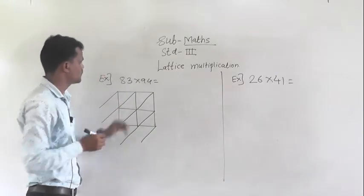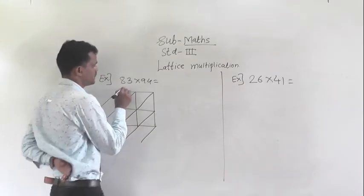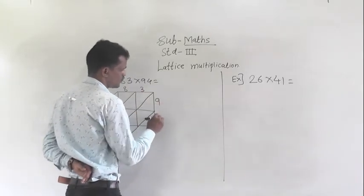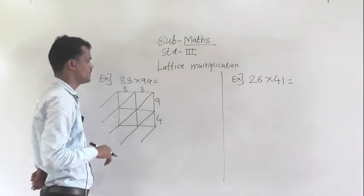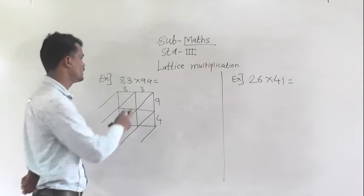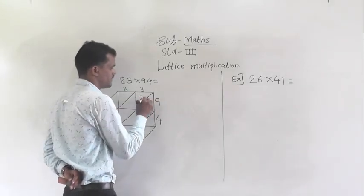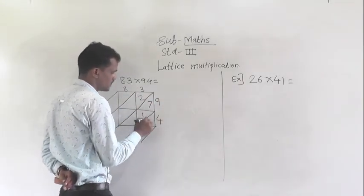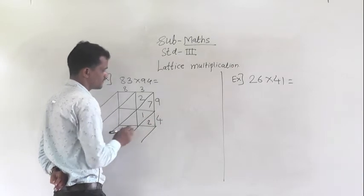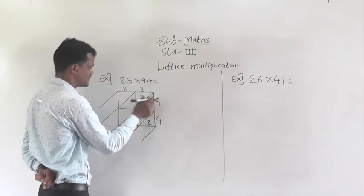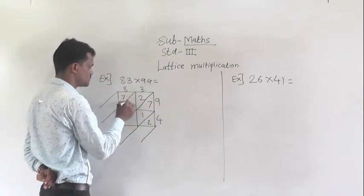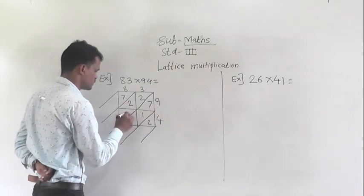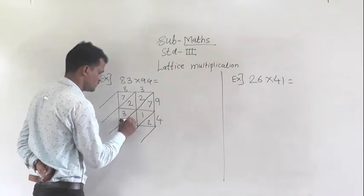Write 83 and 94 here and multiply: 3 nines are 27, 3 fours are 12. Next, 8 nines are 72, 8 fours are 32.